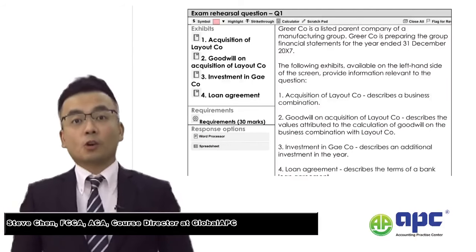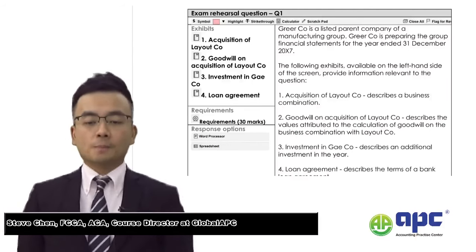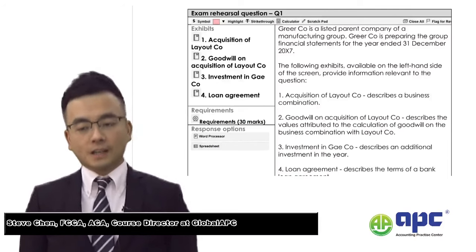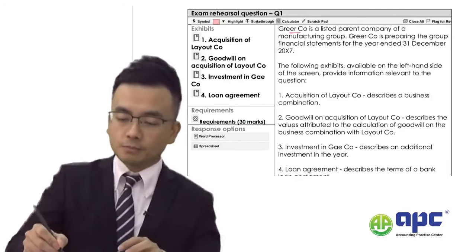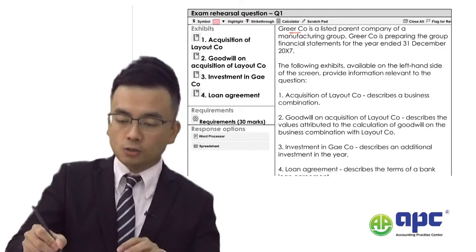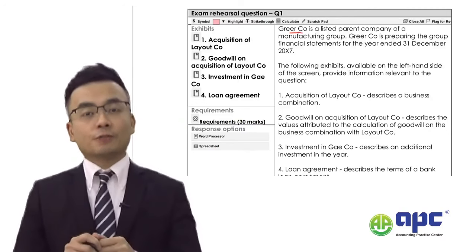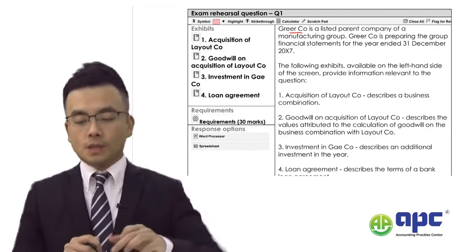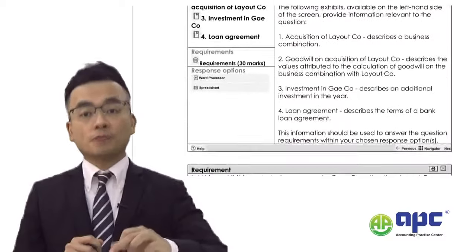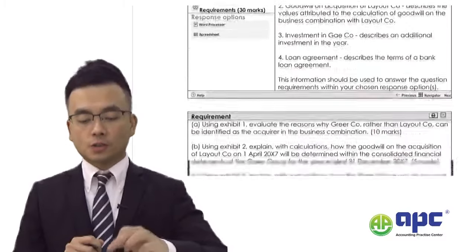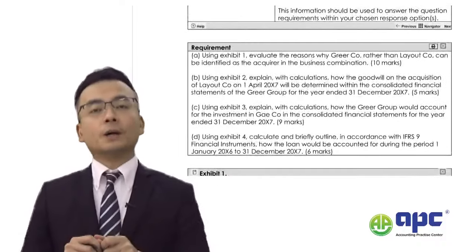Welcome to the past exam question go-through for SBR. Let's look at the question called Greer Company from the March and June 2023 exam. It's question one, worth 30 marks, and we are given four requirements.